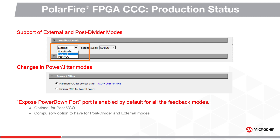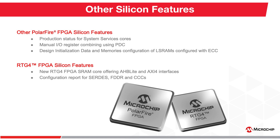This core also shows the VCO value as feedback in the configurator. The expose power-down port feature is enabled by default for all feedback modes. System Services Core, apart from Transceiver CCC and IOD CDR, are in production status. Manual I/O register combining using PDC is supported. Large SRAM is now configured with ECC using design initialization data and memories configuration. For RTG4, two additional features were added: AHB-Lite and AXI-4 interfaces for SRAM using the new RTG4 SRAM core, and configuration reports are now generated for CERTS, FDDR, and CCCs.